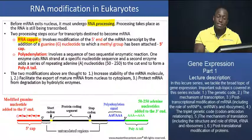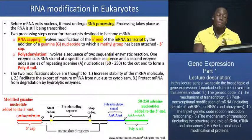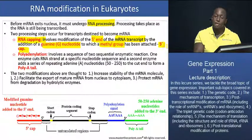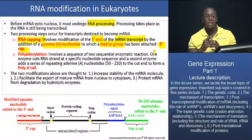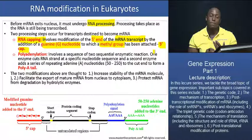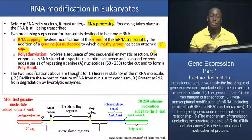RNA capping is basically the modification of the 5' end of the mRNA transcript by the addition of a guanine nucleotide to which a methyl group has been attached. We call this structure the 5' cap. So a methylated guanine nucleotide is added to the 5' end of the mRNA transcript to form the 5' cap. That is the first thing that happens in the processing of mRNA.